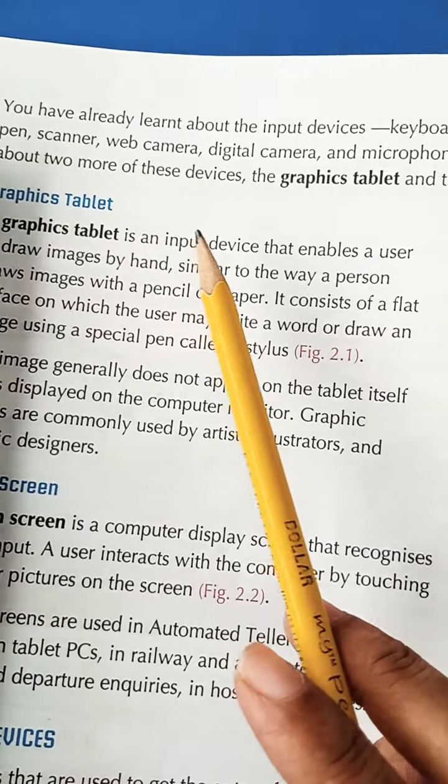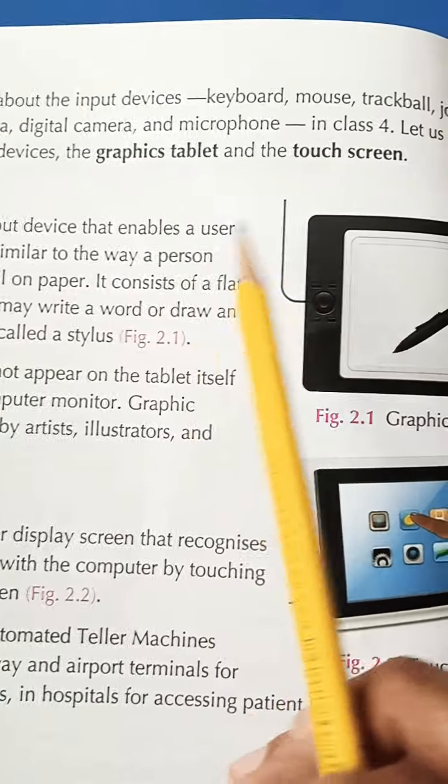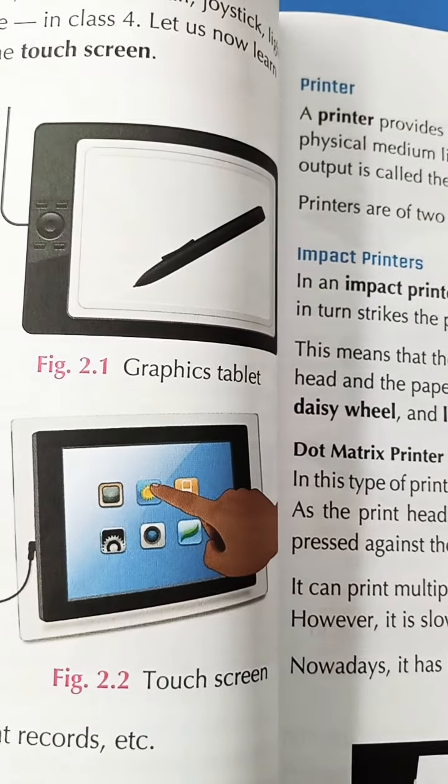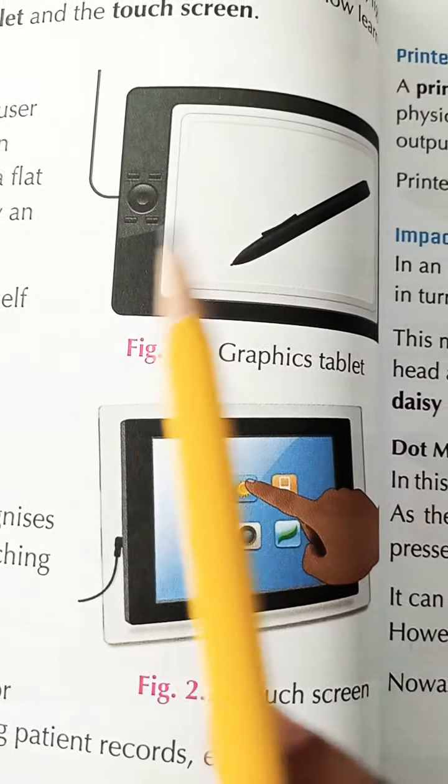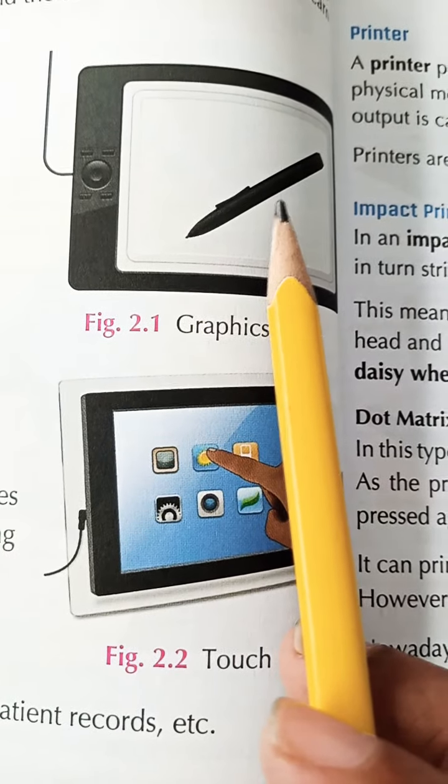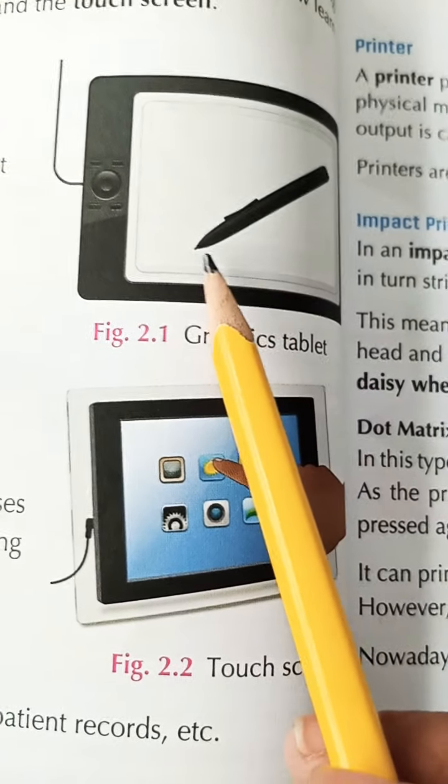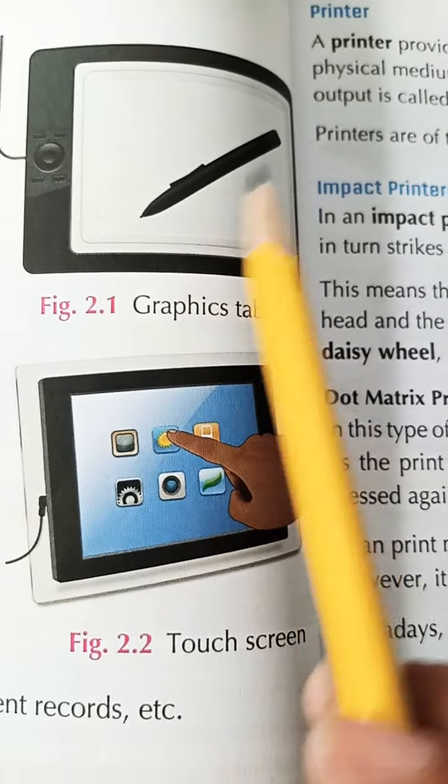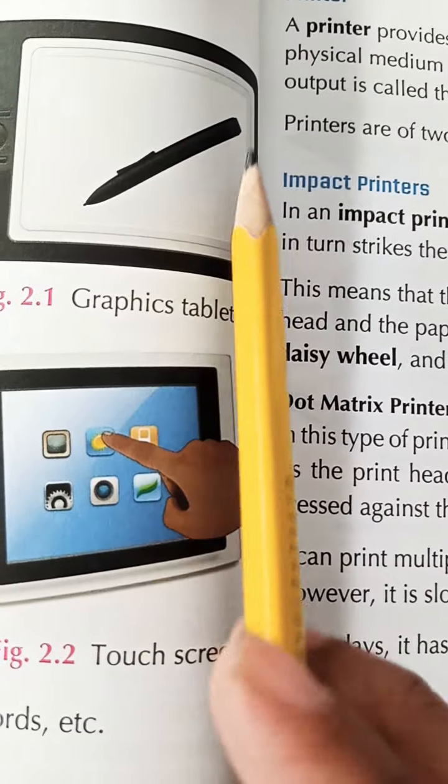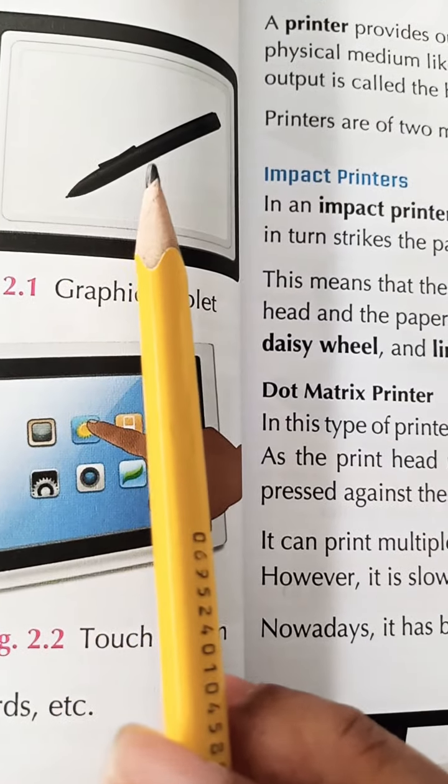Aaj hum aap ko do or devices batayenge that is graphics tablet and touch screen. Graphics tablet. Jiye hain beta graphics tablet. Jiye kya hote hain? Jiye beta ek tarah ka drawing board hai. Aap ismein apne haath se chize draw kar sakte hain, jaise ki aapne drawing book mein karte hain. Pencil se ya pen se. To iske liye bhi ek special pen hota hai. Ye pen kehlata hai beta? Stylus. Is stylus ke through hum jo bhi design ya drawing karte hain, woh design waha appear hota.